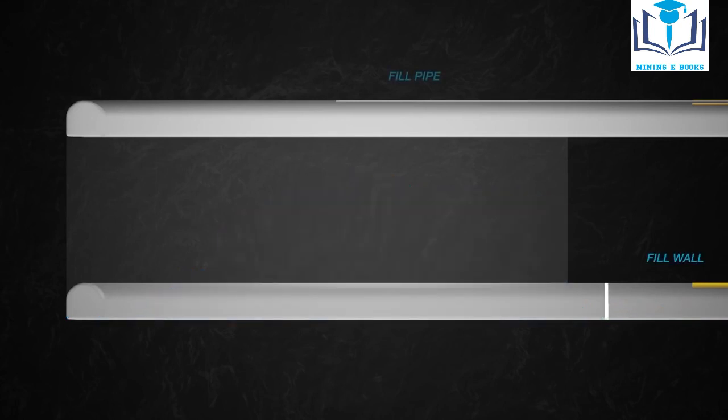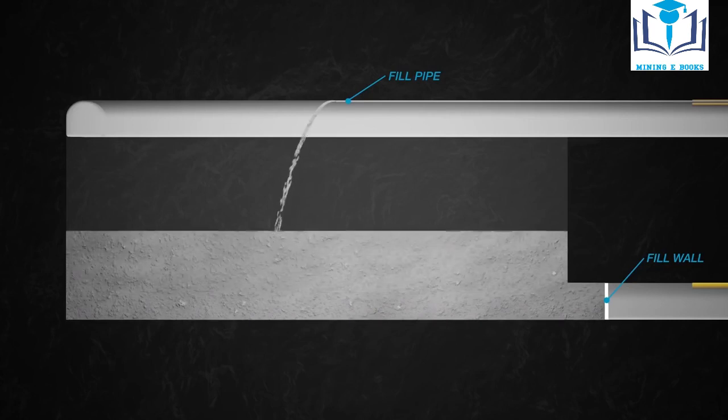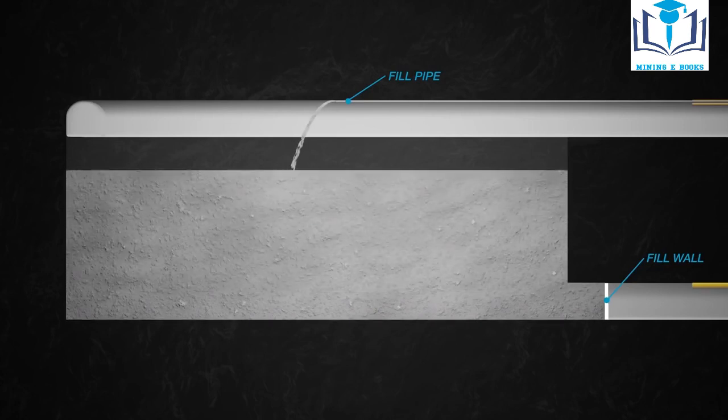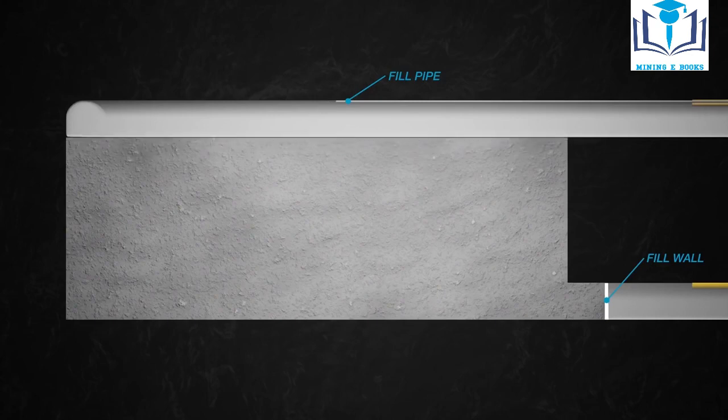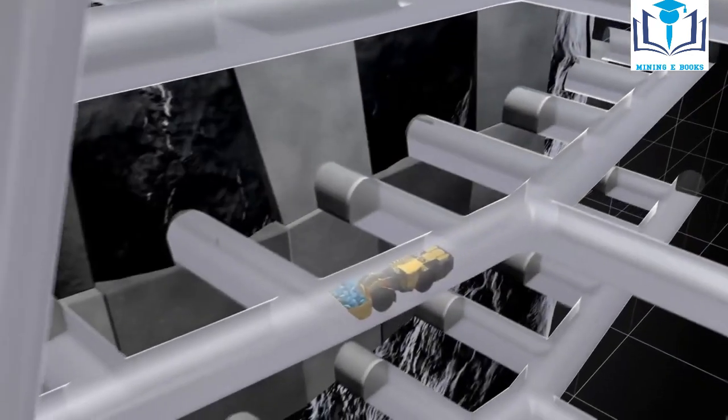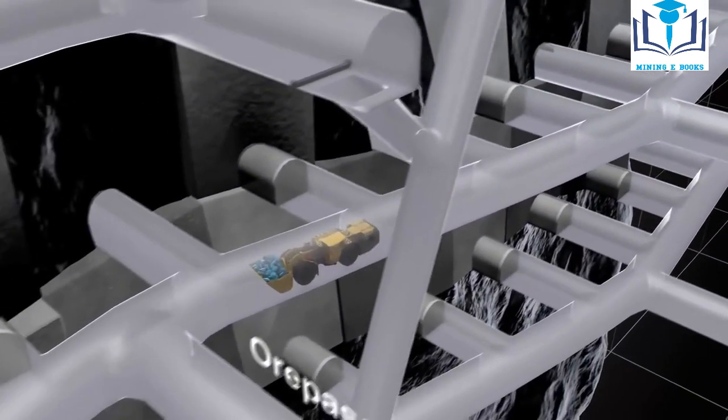One of the advantages with backfilling is the possibility to reuse waste for backfill material, such as tailing sand from the processing plant. The excavation sequence continues according to plan.